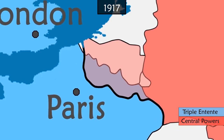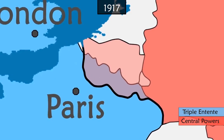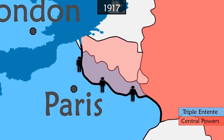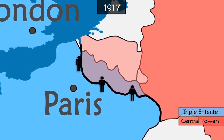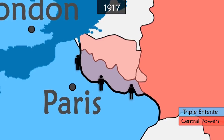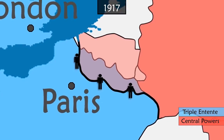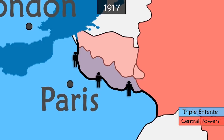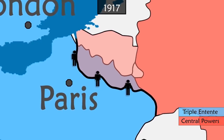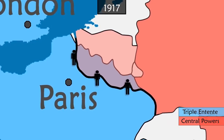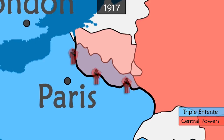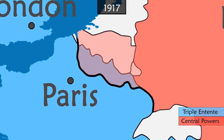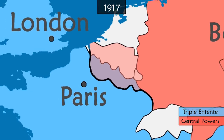Despite some attempts to find breakthroughs, the frontlines of war remain fixed at great human cost. In the trenches, soldiers who survive the fighting are forced to live in harsh conditions — mud, vermin, rats and the smell of decaying corpses put their nerves to the test. In the spring, the French side begins mutinies that would be suppressed. Germany also tires of the stalemate.